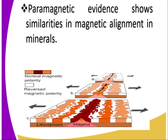And then we have the paleomagnetic evidence. This shows the similarities in the magnetic alignment in minerals. For example, there is a diagram showing normal magnetic polarity and reverse magnetic polarity, which you can see illustrated. So those are some of the evidence that support the continental drift theory.